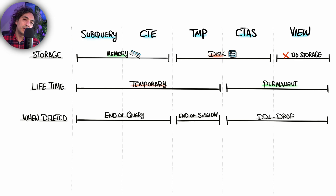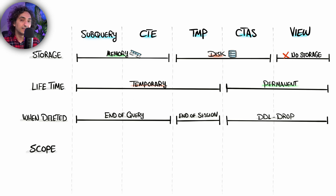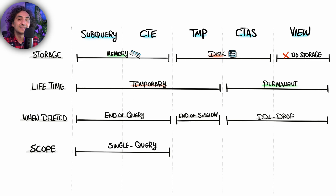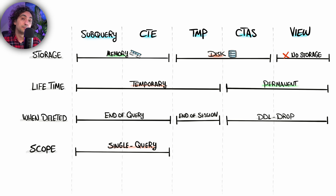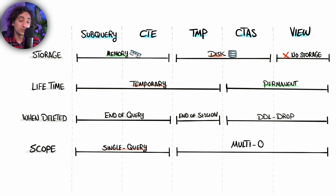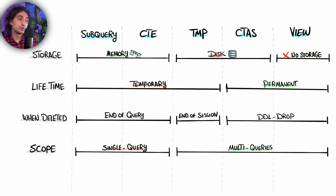The next criteria is query scope — how we can access those objects. For subqueries and CTEs the scope is very small; they are accessed only from the single query where you write them. You cannot access them from external queries. But temporary tables, CTAS, and views can all be accessed from multiple external queries.